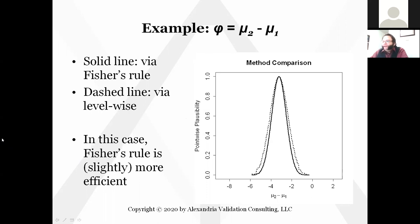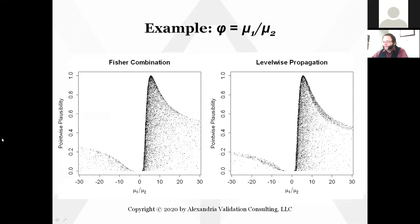Here's what it looks like if we look at just the top-line function. The solid line is what you get using Fisher's rule of combination; the dashed line is what you get doing level-wise propagation with the correction for independence. In this case, Fisher's rule is slightly more efficient.